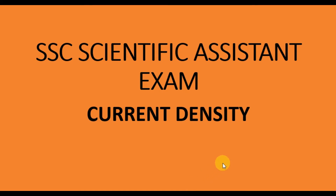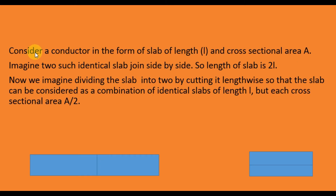In this video we look at the topic of current density. To understand this concept, we consider a conductor in the form of a slab of length L and cross-sectional area A.